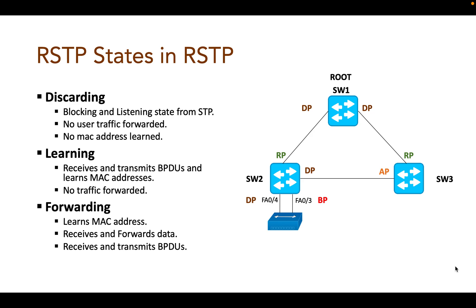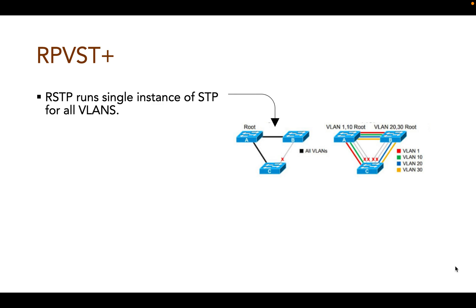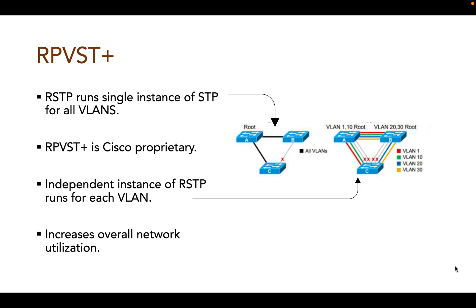Now let's look at what RPVST+ is. RSTP, like STP, runs a single instance of STP for all VLANs and will have a single root bridge for all VLANs, which overall impacts network utilization. RPVST+ is the solution for this problem and it is a Cisco proprietary version of RSTP. Rapid PVST+ has an independent instance of RSTP that runs for each VLAN. Each RPVST+ tree can have a different root switch and therefore can span through different links. Since different VLAN traffic can take different active paths from multiple possible topologies, overall network performance and utilization increases.